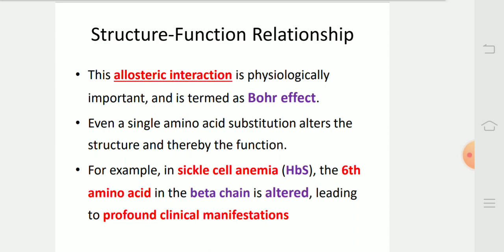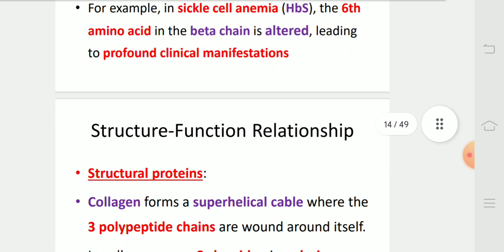For example, in sickle cell anemia, the sixth amino acid in the beta chain is altered, leading to profound clinical manifestations.